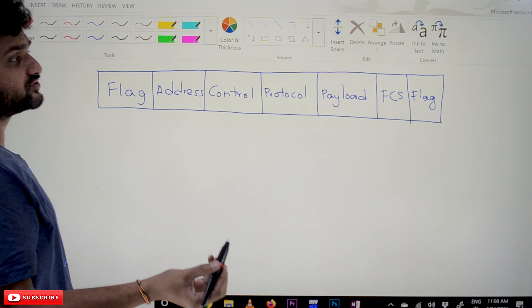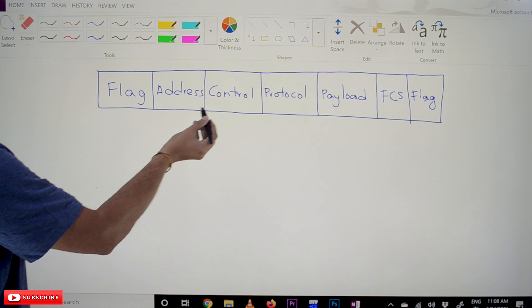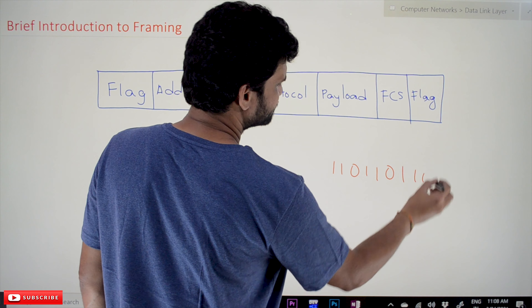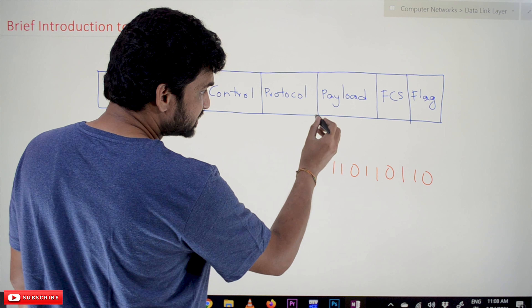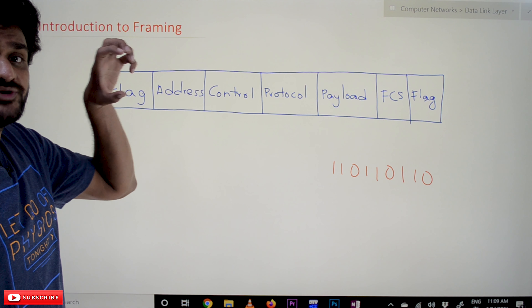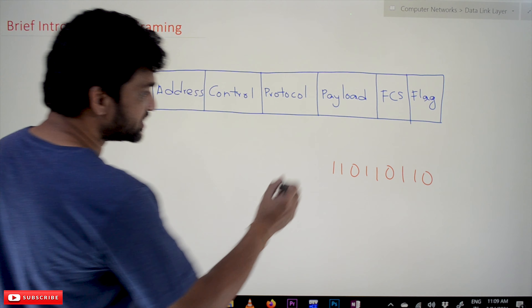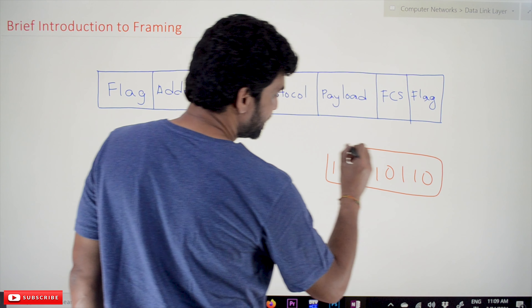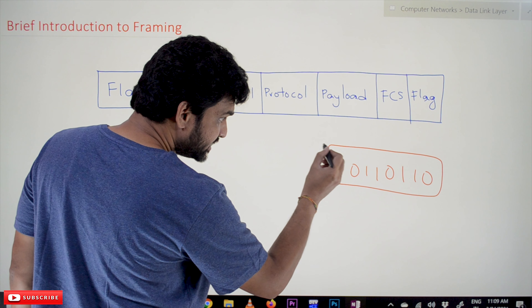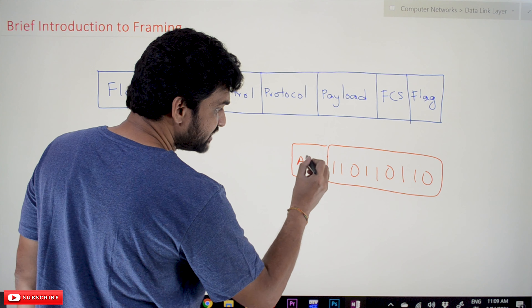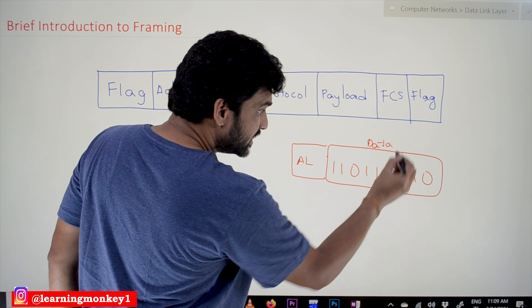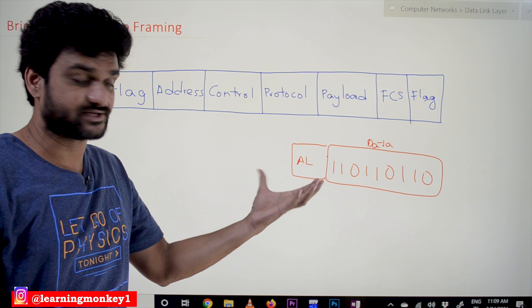Every layer is going to attach its own control fields to the original data. For example, if we want to transfer data like 1 1 0 1 1 0 1 1, each and every layer will attach some extra fields. The topmost layer is the application layer, so the fields related to the application layer will get added. This combination of data along with its control bits is what we call payload.